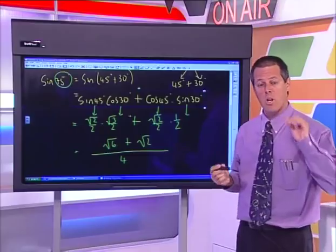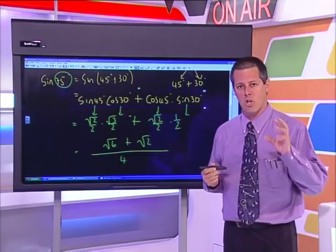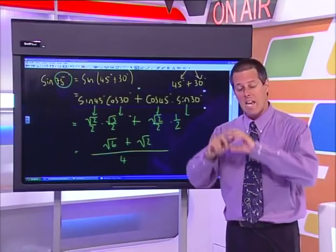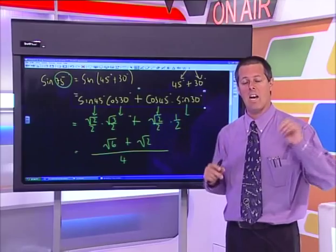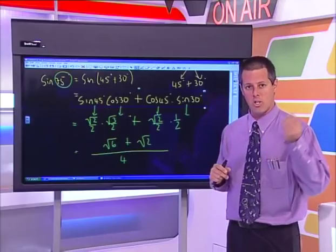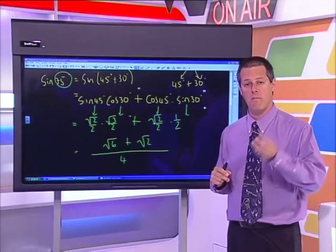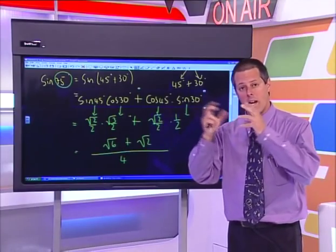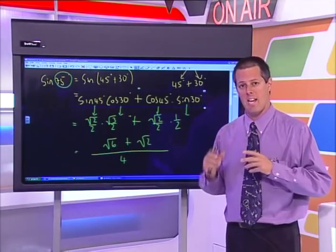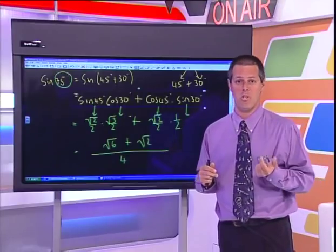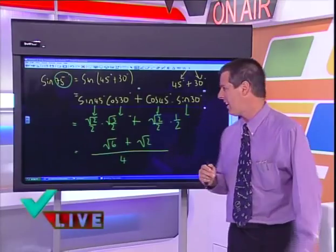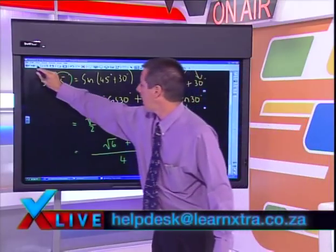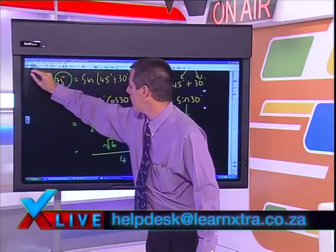What I really want to show you is how you can use this rule to evaluate something which is not a special angle. In Grade 12, when we learn about compound and double angle formulae, quite often we take special angles — 30, 45 and 60 — and combine them by adding or subtracting to create new special angles.